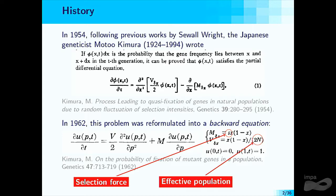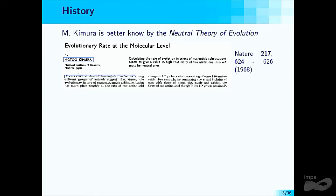The boundary conditions for the adjoint equation are clear: if we start with zero individuals of this type, the fixation probability is zero; if the population is entirely of the first type, the fixation probability is one. For the forward equation, we don't impose boundary conditions — that's an interesting mathematical problem we'll discuss later.